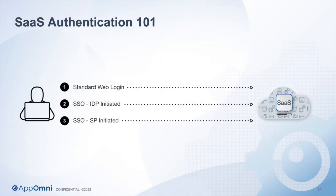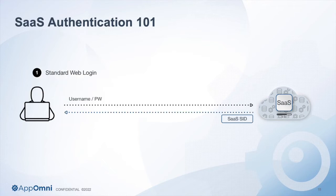Let's talk about how authentication for these applications works. What we need to understand is the basics of SaaS web authentication. There are three main ways you can authenticate: direct username and password, an IDP-initiated single sign-on flow, or a service provider-initiated single sign-on flow. The first one — standard username and password — I type in my username and password, click submit, and if it's valid, I get a session ID. This is the way web applications work.